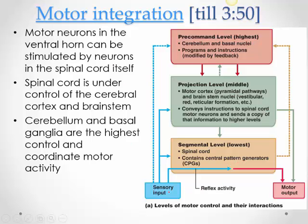A sensory input enters the spinal cord at the lowest level and can synapse directly on a motor neuron in the ventral horn, or on an interneuron which then synapses on a motor neuron, and the signal exits through the ventral root to supply a muscle — a local reflex. Alternatively, a sensory input travels up to the brain, is integrated, and the motor area of the brain generates a response that comes down and synapses on the anterior horn cells, which then supply the muscles.